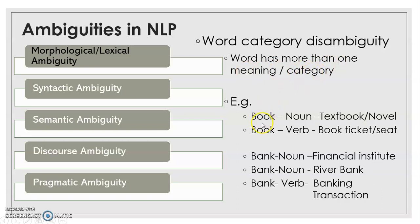For example, the word 'book' can come under the category noun when used in the context of a textbook or a novel. That same word 'book' can come under the category verb when used in the context of booking a ticket or a seat. Deciding which meaning to take and which to discard is called resolving lexical or morphological disambiguity.